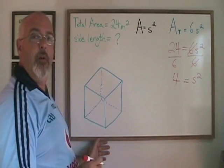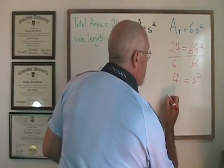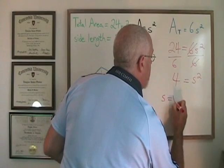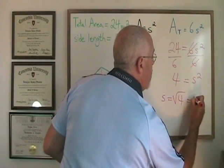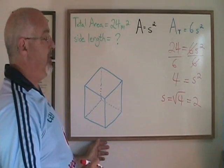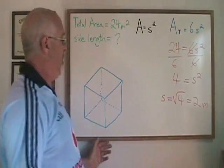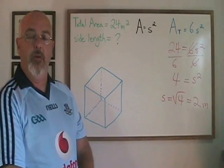We're not finished. We want to know the side length s. If s squared is equal to 4 then s is equal to the square root of 4 which is 2. Since our unit for area was meters squared, the unit for distance must be meters. The side length in this cube is 2 meters.